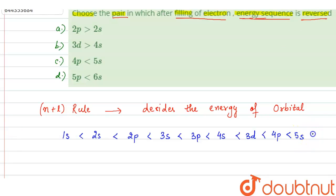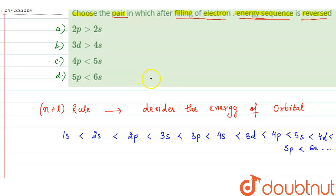Continuing the energy order: then 4D, then 5P, then 6S, and so on. This is basically the energy order according to the N plus L rule.